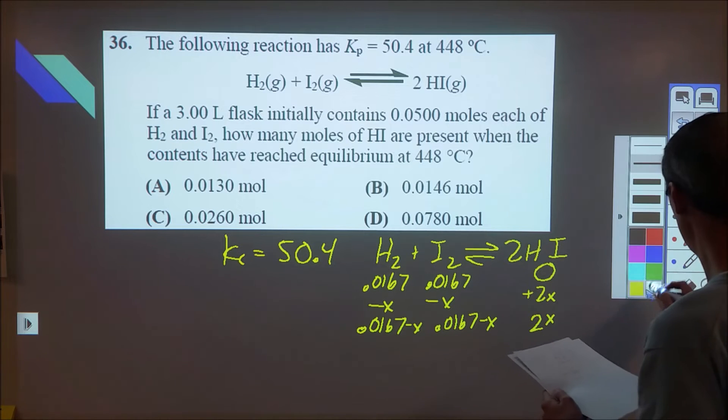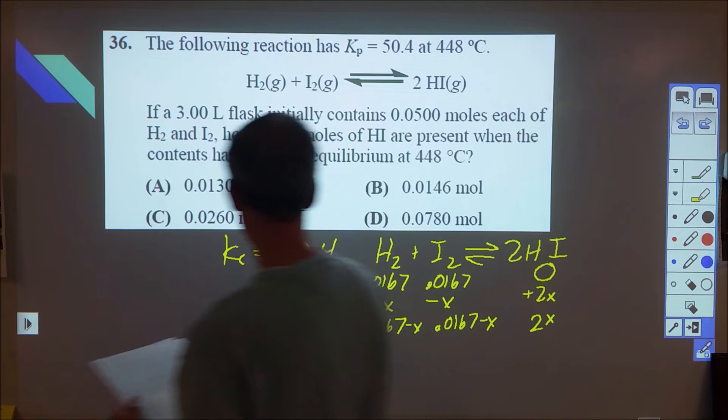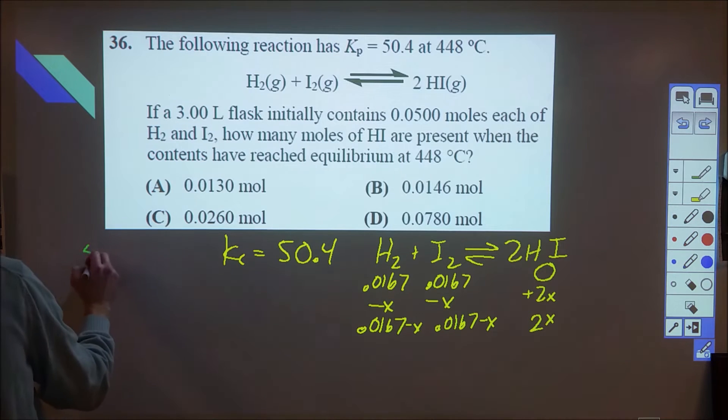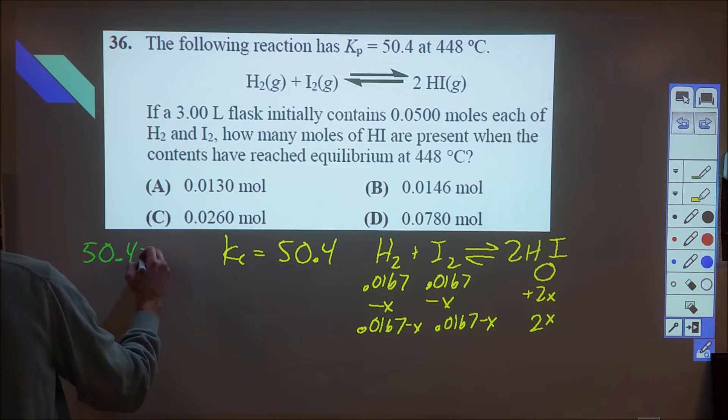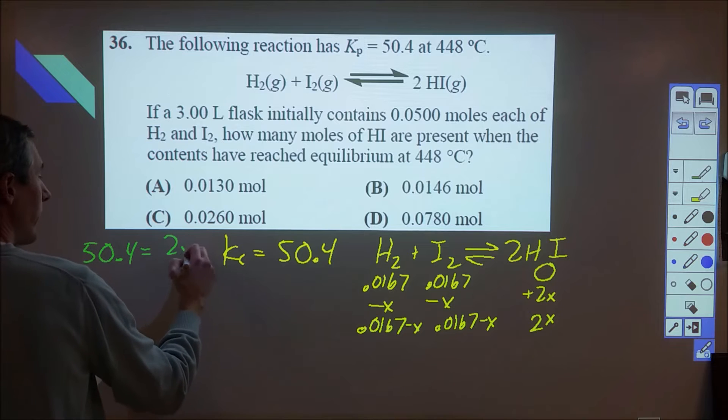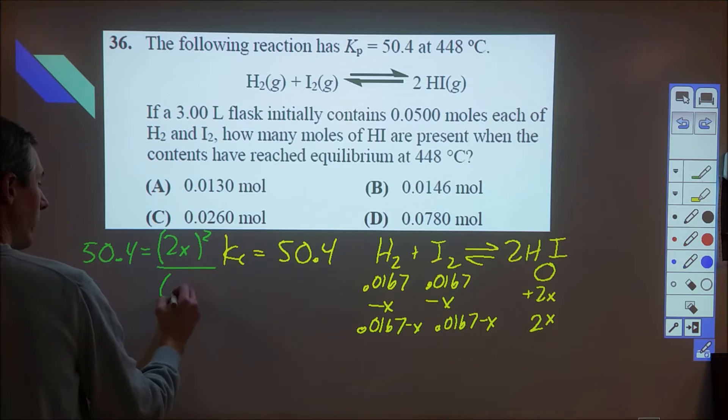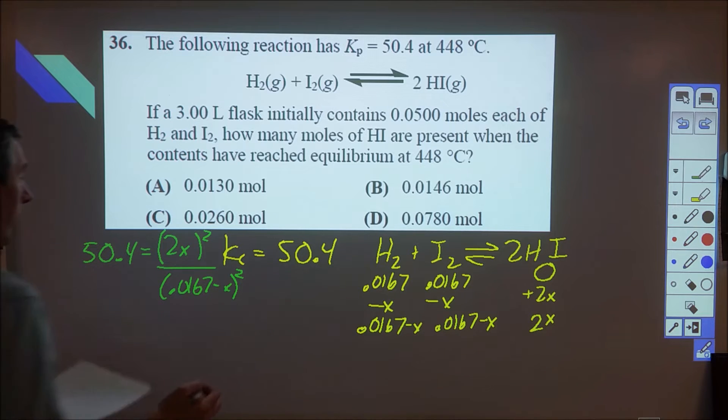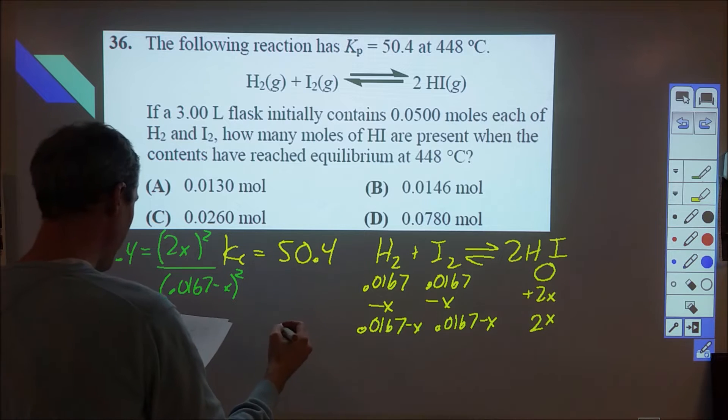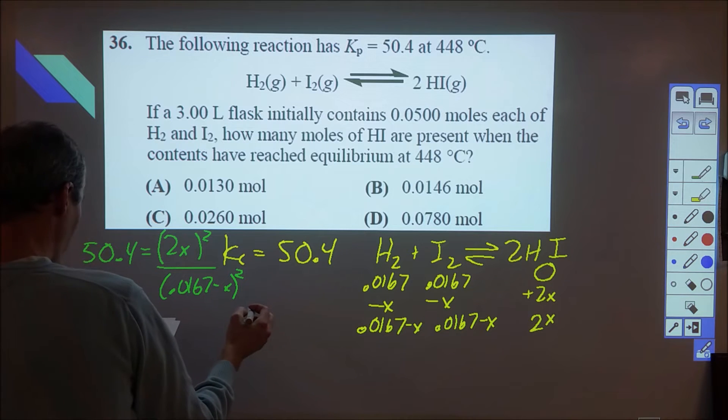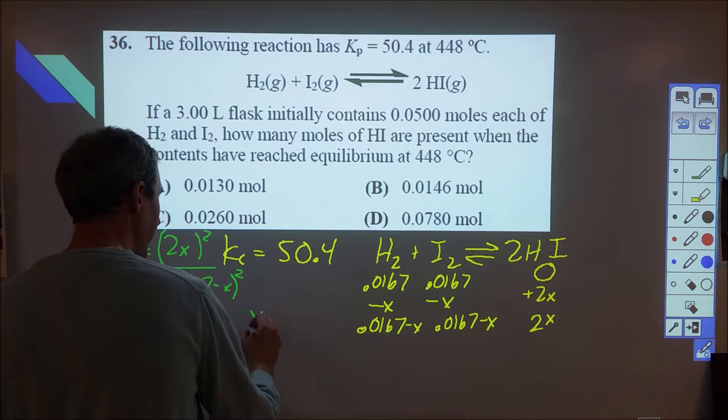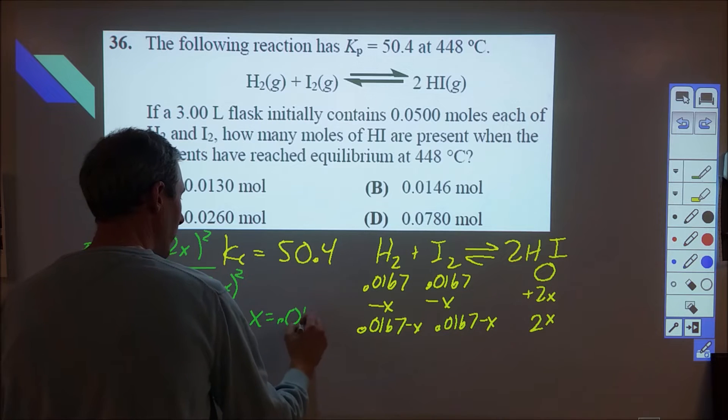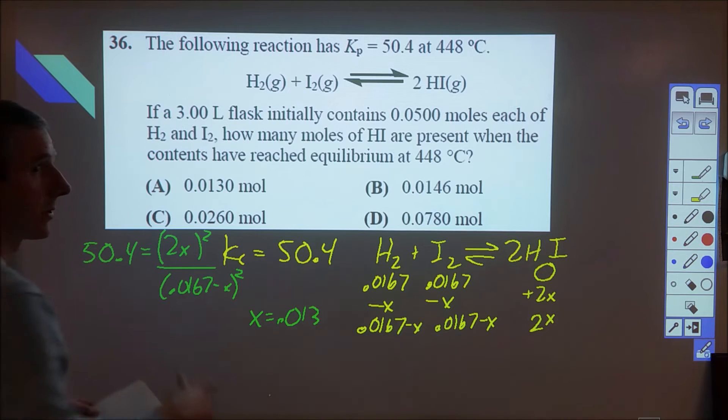So we can then plug into a K expression, and we can say that 50.4 is equal to 2x squared over 0.0167 minus x times itself squared. So I can square root this side, I can square root this side, and simplify that down a little bit. When I do that, what I end up finding is that x is equal to 0.013, which is one of the choices.